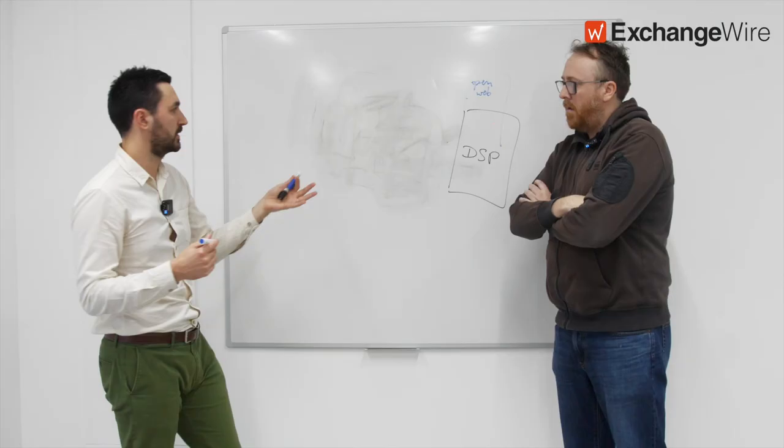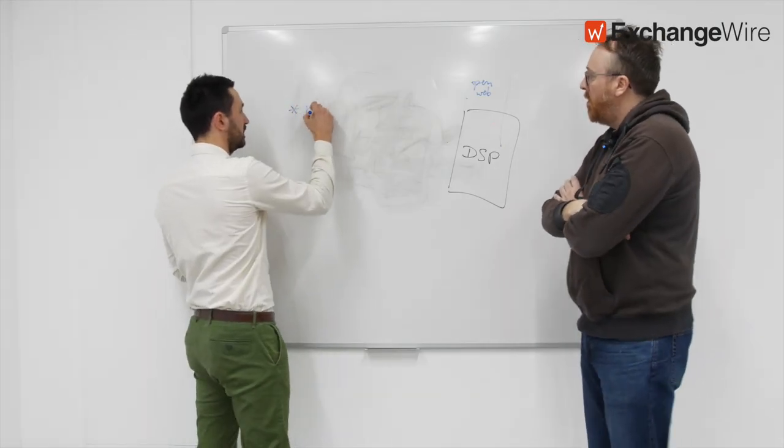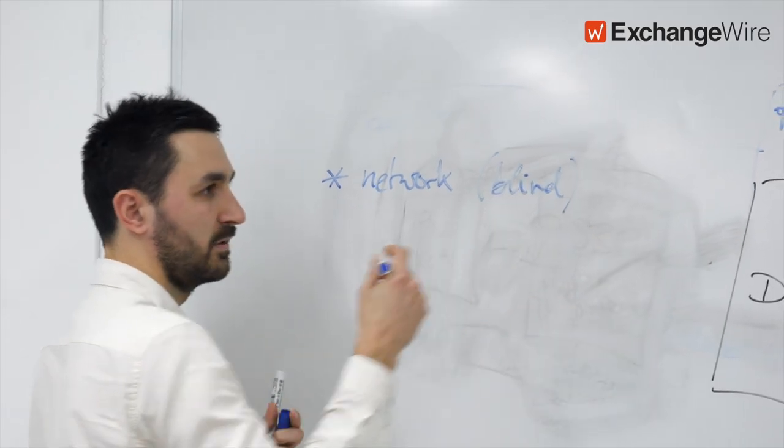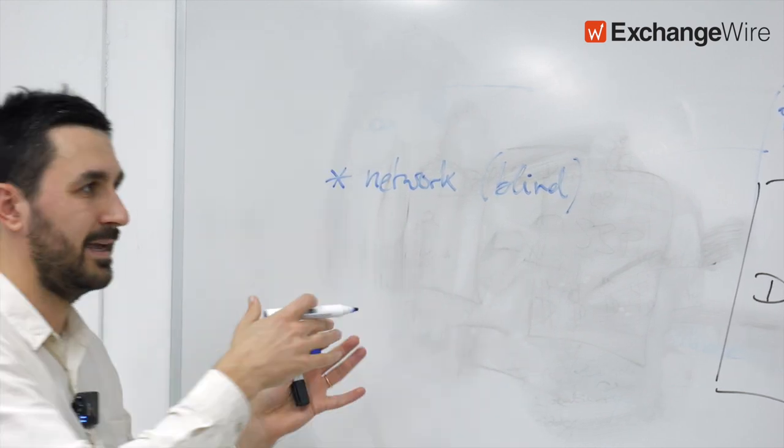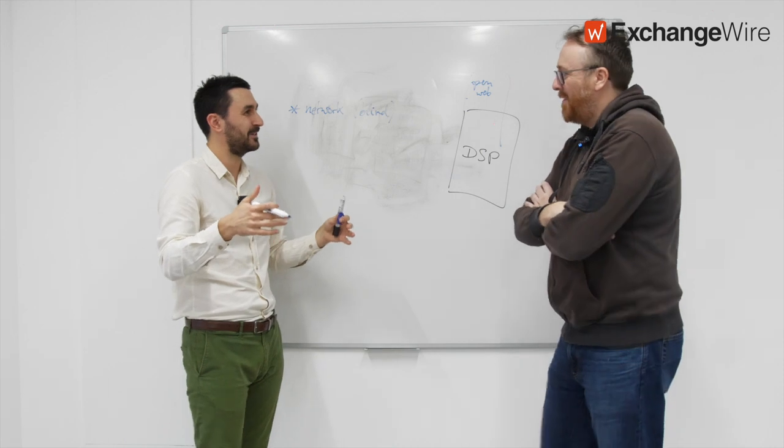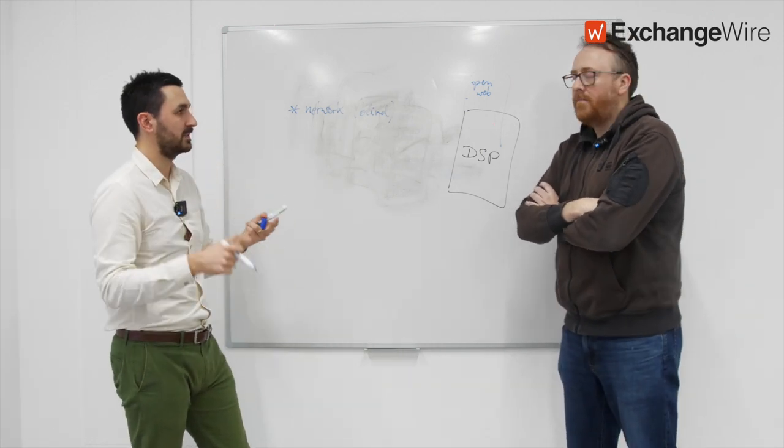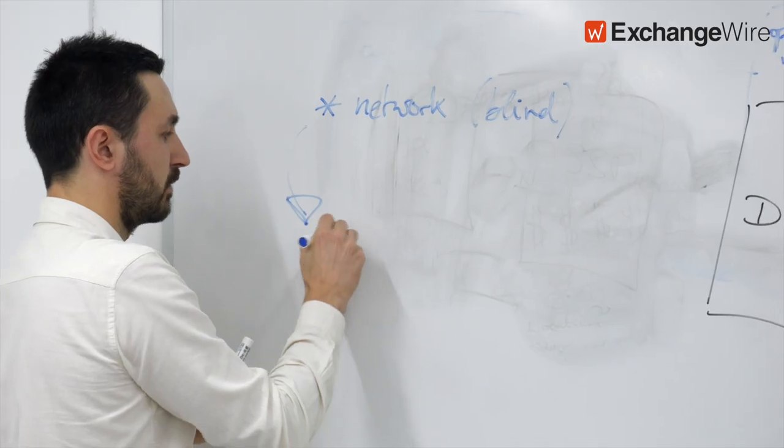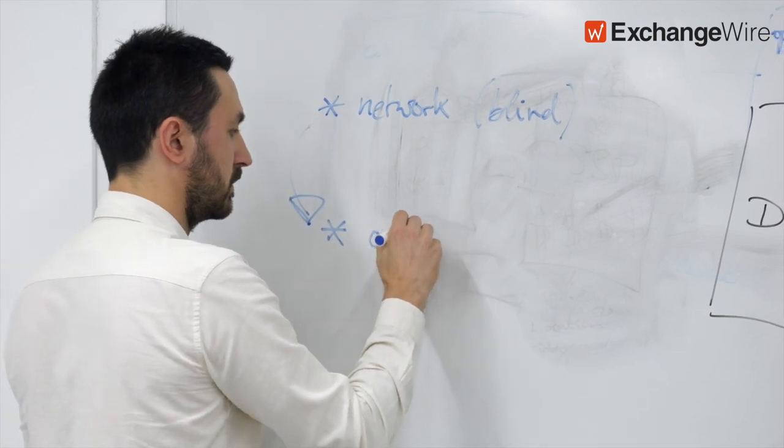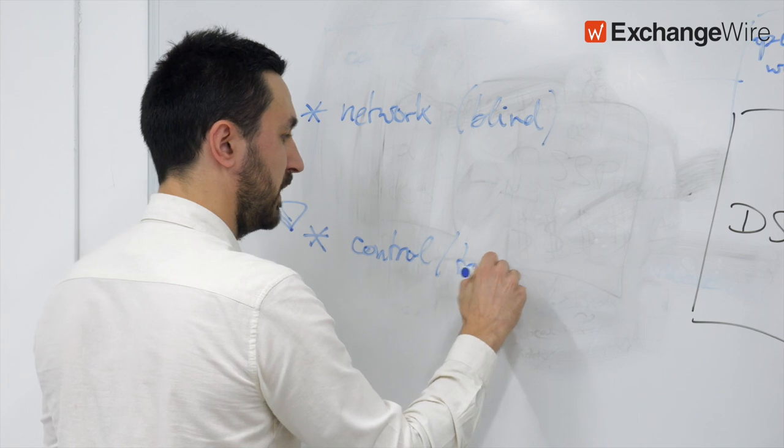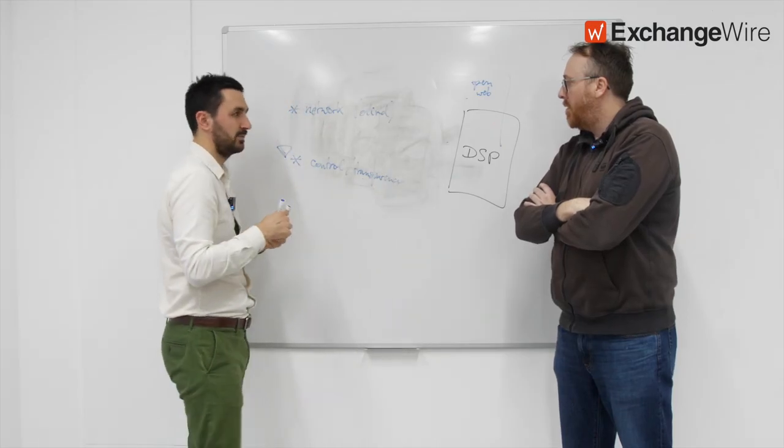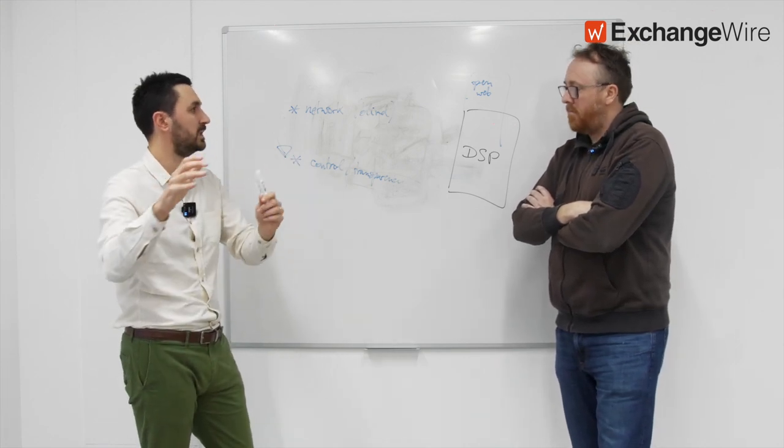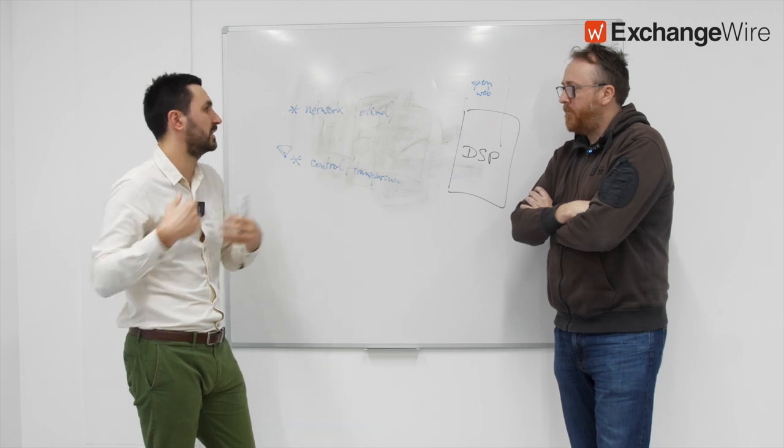So when you think about HookLogic, what they were selling was fundamentally a network of retailers. But very important, it was a blind one. So effectively, as a brand, I'm just putting budget and I'm hoping that it's actually going to the right retailer and performing correctly. But I don't have any visibility into that. I don't have any control over budget allocation. So the first kind of big move was saying, no, we're actually going to give control and transparency. And so that was something we did three years ago that effectively opened the floodgates for brands to say, okay, now I can actually say, this is my budget for Asda. This is my budget for Sainsbury's. And I do feel that I have much more control. So I feel more enticed to actually spend more.